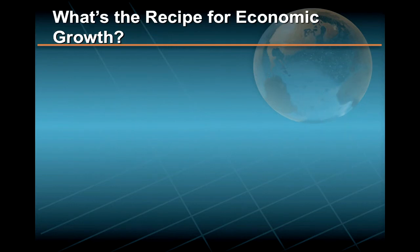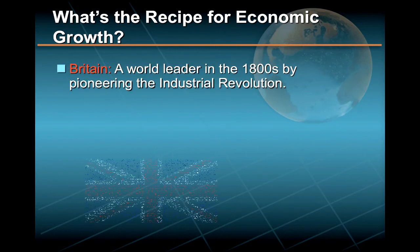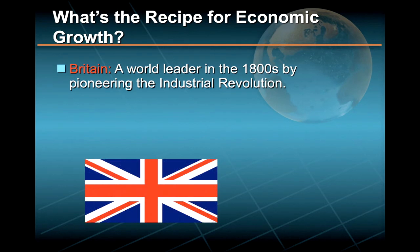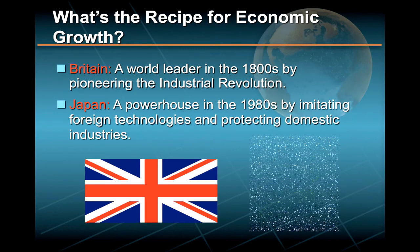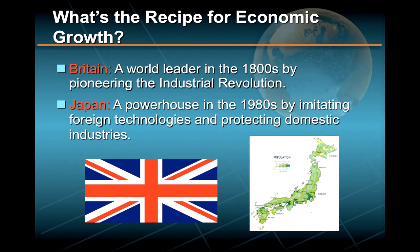So what is the recipe for such economic growth? To begin with, successful countries need not follow the same path. Britain, for example, became the world economic leader in the 1800s by pioneering the Industrial Revolution, inventing steam engines and railroads, and emphasizing free trade. Japan, by contrast, came to the economic growth race later. It made its mark by first imitating foreign technologies and protecting domestic industries from imports, and then by developing tremendous expertise in manufacturing and electronics.